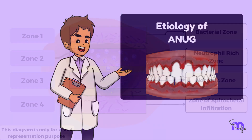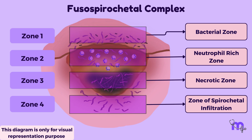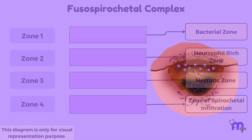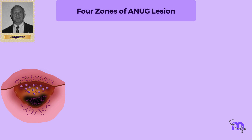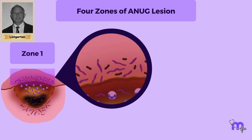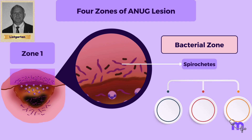Let's move on to the etiology. It is caused by the fusiform bacteria and a spirochetal organism referred to as the fusospirochetal complex. These are noted in the layer between the necrotic and the living tissue. Listgarten provided electron microscopic data confirming the presence of spirochetes in the ulcerated lesions and described four zones that blend and may not be present in every case. Zone 1 is called the bacterial zone and is the most superficial. It consists of a variety of bacteria including spirochetes, which may be small, medium, and large in size.